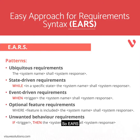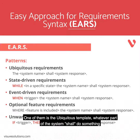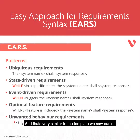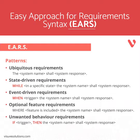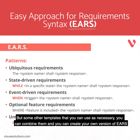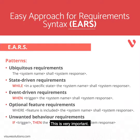EARS proposes five different templates. One of them is the ubiquitous template: whatever part of the system shall do something. That's very similar to the template we saw earlier. But there are other templates you can use as necessary, you can combine them, and you can create your own version of EARS. This is very important.